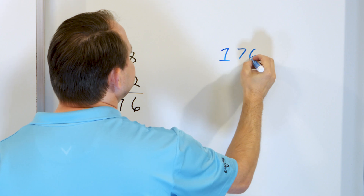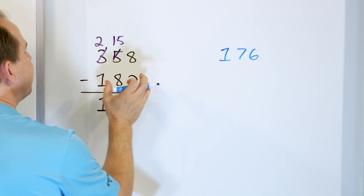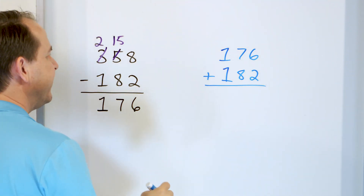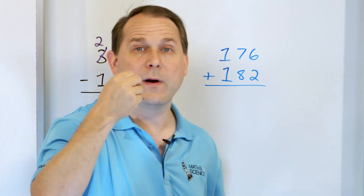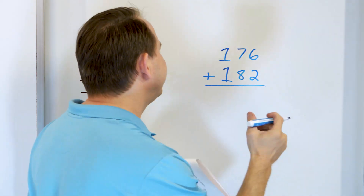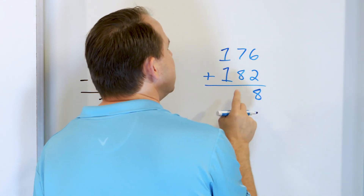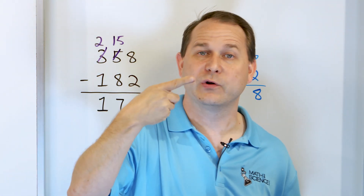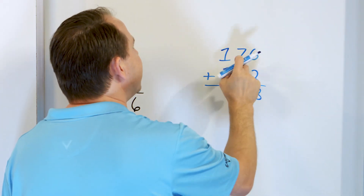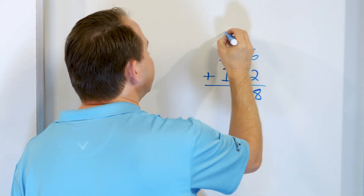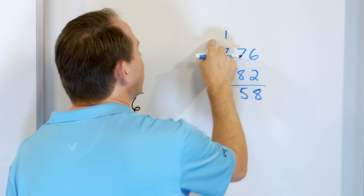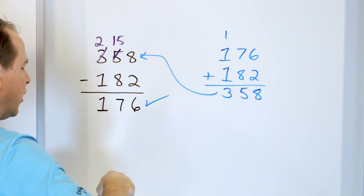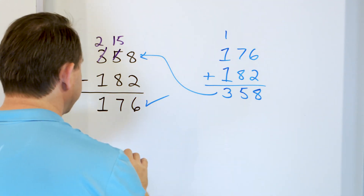Let's check it: 176, we're going to add in what we just subtracted — 182. What is 6 plus 2? Start with 6, go up: 7, 8. So 6 plus 2 is 8. Now what is 8 plus 7? Start with 8 and go up: 9, 10, 11, 12, 13, 14, 15. We land on 15 — 8 plus 7 is 15, so we put a 5 here and carry the 1. 1 plus 1 is 2, plus 1 more is 3. We get 358 — that exactly matches, so we know we did our original subtraction correctly.